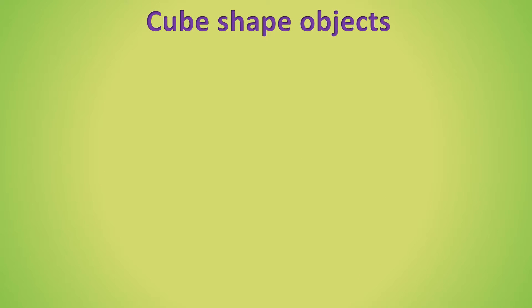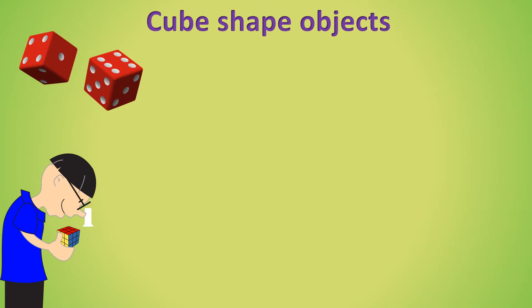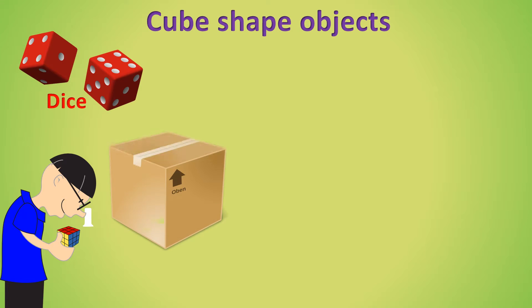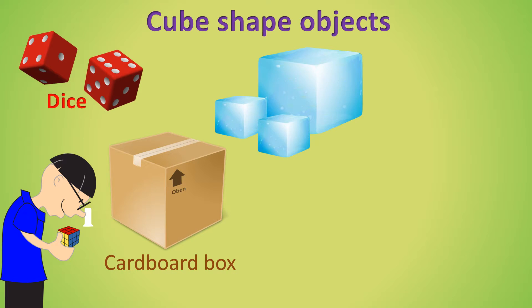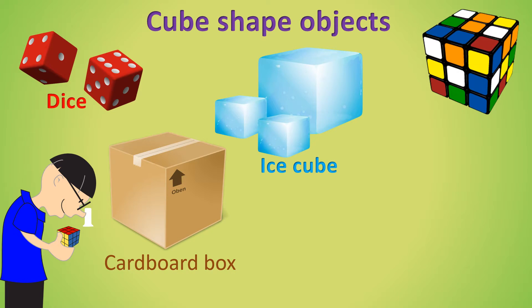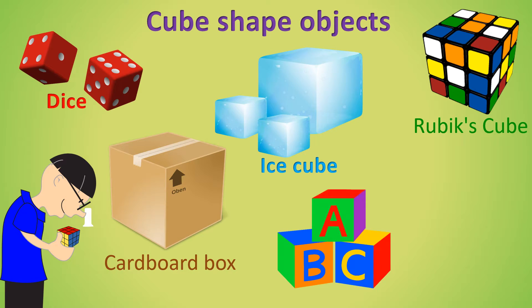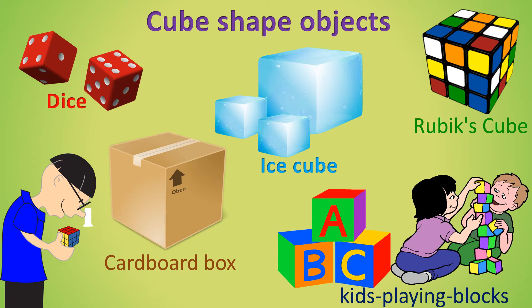Cube-shaped objects: Dice, cardboard box, ice cube, Rubik's cube, kids' building blocks. All these are cube-shaped objects.